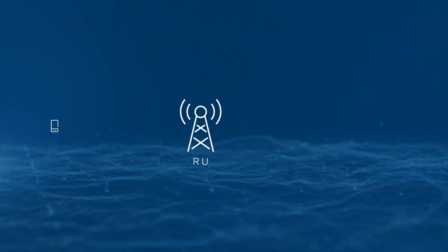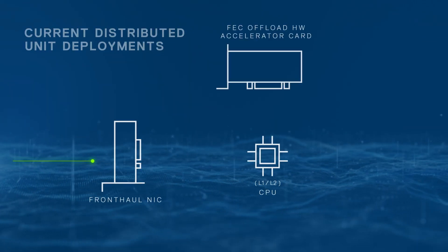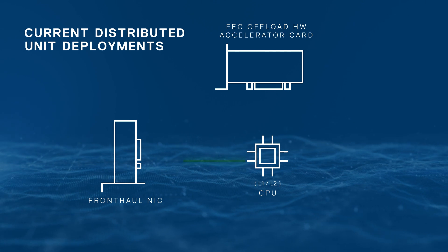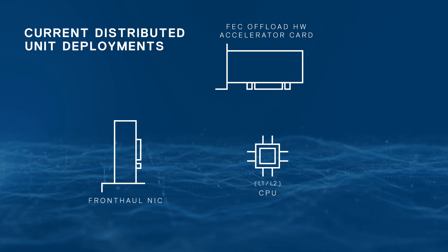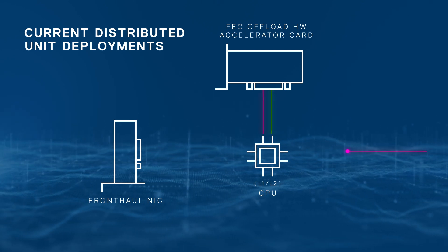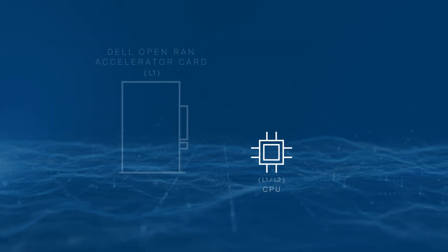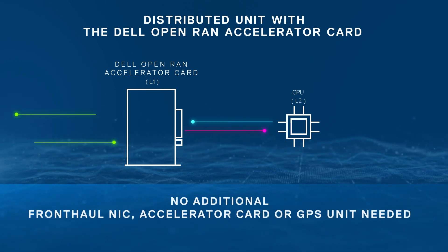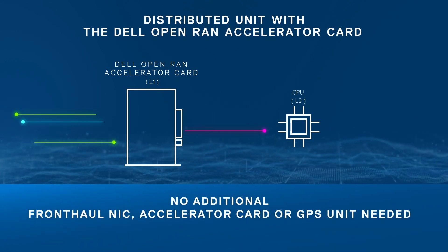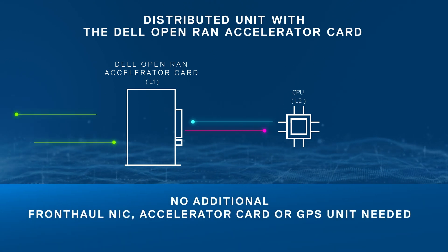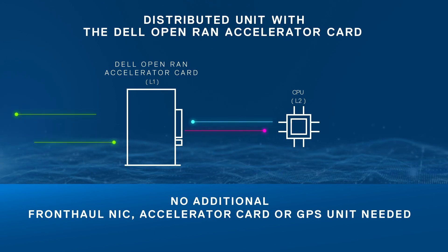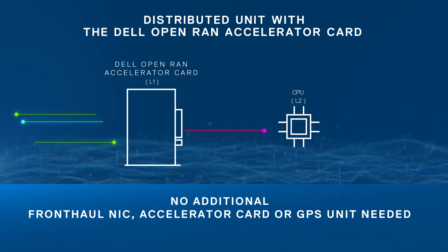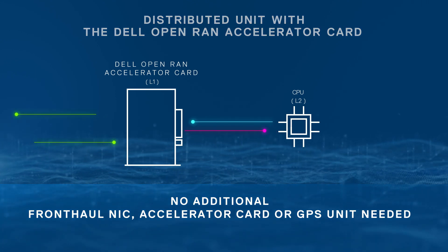Unlike traditional accelerator cards, which shuffle critical distributed unit RAN processes back and forth between the accelerator card and the server CPU, this new card processes all Layer 1 functions in-line, completely within the L1 card, providing higher performance and a more efficient DU solution.